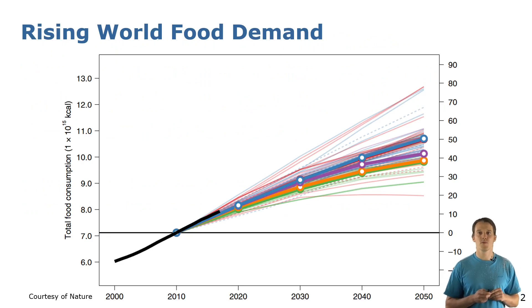Here you can see different models predicting food demand until 2050. They all have one thing in common. Food demand is going to increase.